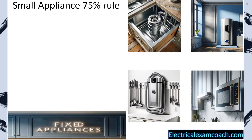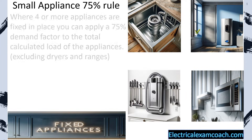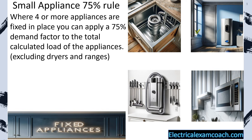The small appliance 75% rule works like this: where four or more appliances are fixed in place, you can apply a 75% demand factor to the total calculated load of the appliances. I do want to note again that this excludes dryers and ranges.